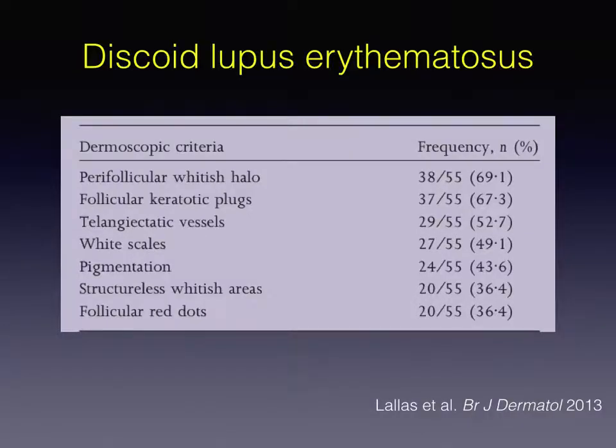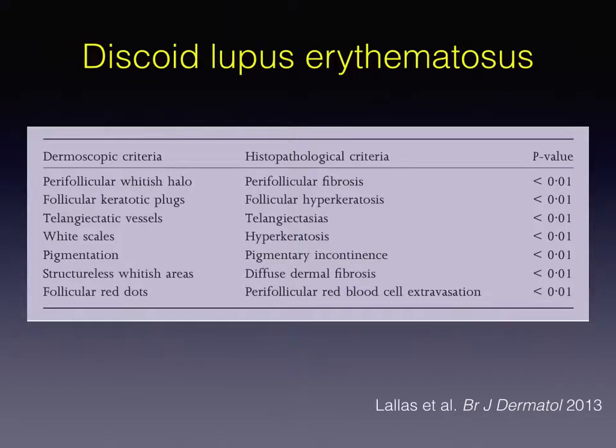This is a plaque developing on the cheek of a 60-year-old man. This is an early lesion of discoid lupus erythematosus, displaying under dermoscopy a few follicular plaques and the characteristic perifollicular whitish hollows that correspond to early perifollicular fibrosis. Several dermoscopic features have been found in discoid lupus erythematosus, and they perfectly correspond to the various histopathologic alterations that take place during the course of the disease.